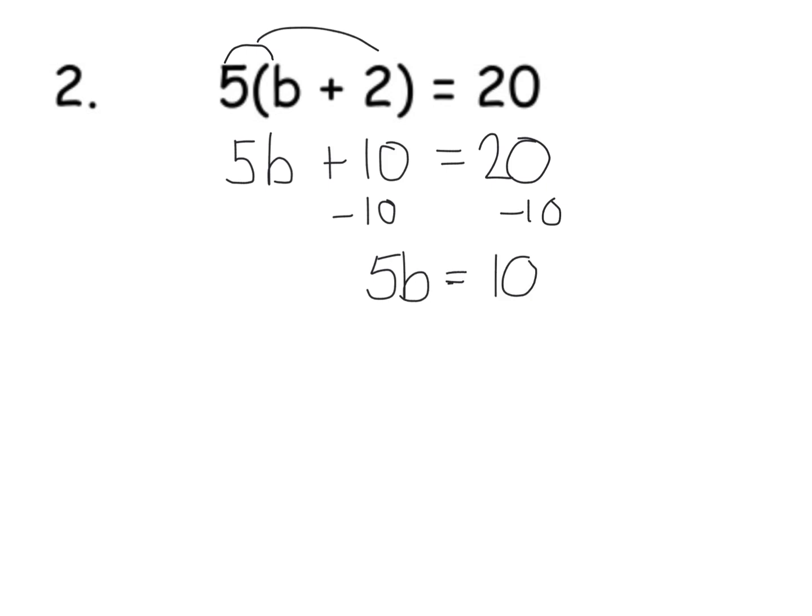And it leaves me with 5b equals 10. And then at this point, how do we get that one? Well, 5 times what is 10? Essentially, you're doing 10 divided by 5—you're dividing each side of the equation by 5. And 10 divided by 5 is 2, so b equals 2.